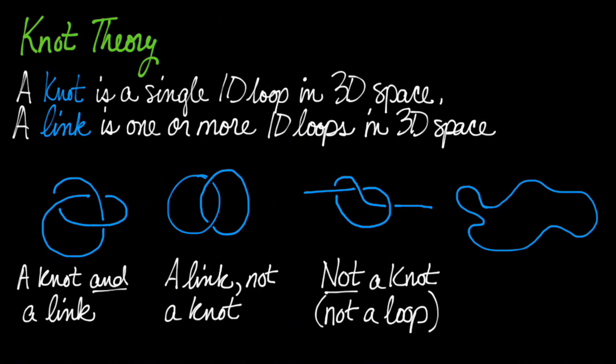However, it is a single 1D loop in a 3D space. And so this definitely counts as a knot. It's kind of a stupid knot, but it's a knot. In fact, all the mathematicians call it an un-knot.